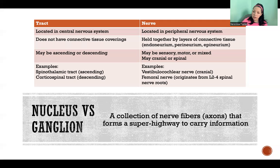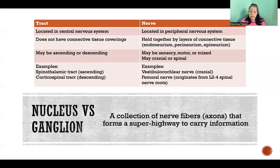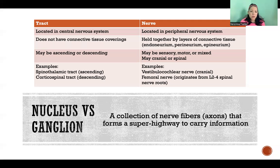Cranial nerves are nerves that leave from the brain, and they may be sensory, motor, or mixed. Spinal nerves are nerves that branch off from the spinal cord, and they are all mixed.